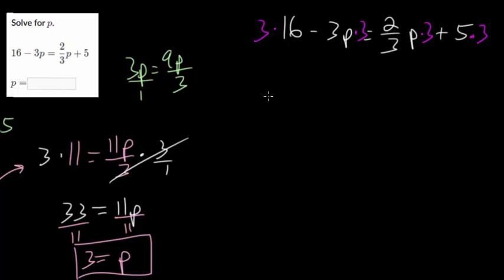So 3 times 16 is 48. 3 times 3p would be 9p, and we're subtracting. Now, the whole point of this, we have 3 up top and 3 below, so they cancel. And you just get 2p, and then plus 5 times 3 is 15. And now, it's the same problem, just no fractions. So much simpler to solve.